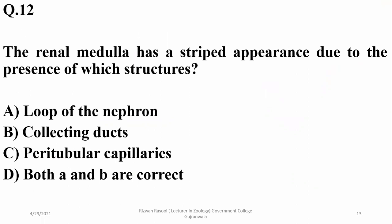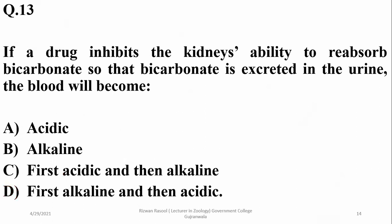The renal medulla has a striped appearance due to the presence of which structures? The striped appearance of the renal medulla is due to the collecting ducts as well as peritubular capillaries, so delta is the right answer.